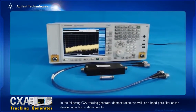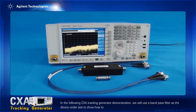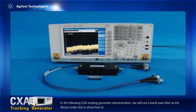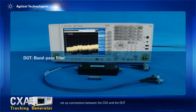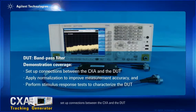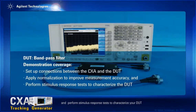In the following CXA tracking generator demonstration, we will use a bandpass filter as the device under test to show how to set up connections between the CXA and the DUT, apply normalization to improve measurement accuracy, and perform stimulus response tests to characterize your DUT.